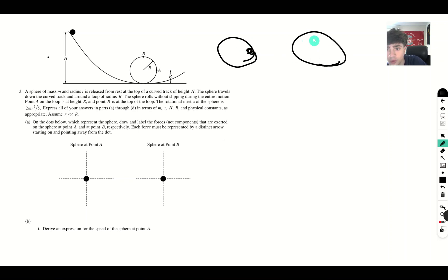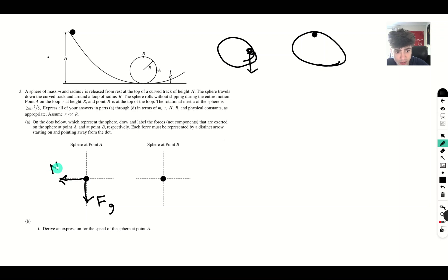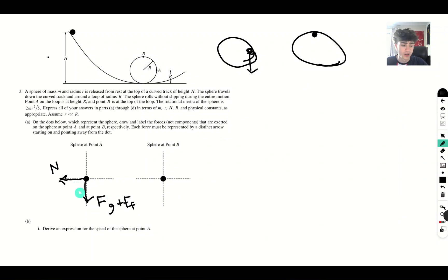At point A, we're obviously going to have gravity, so let's write the force of gravity going straight down. Additionally, we're going to have the normal force exerted by the track on the ball, perpendicular to the track, so the normal force is going to be pointing this way and upward. On top of that, we also have friction, which is going to be going downward — force of gravity plus frictional force.